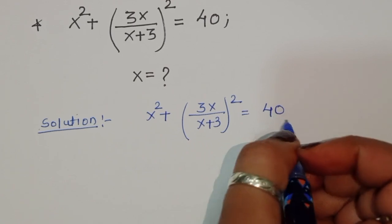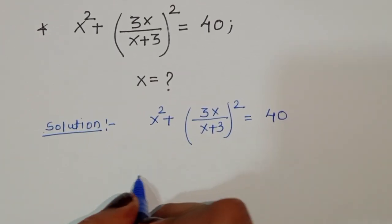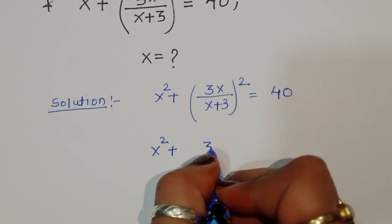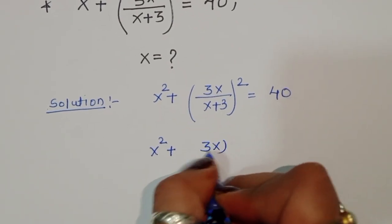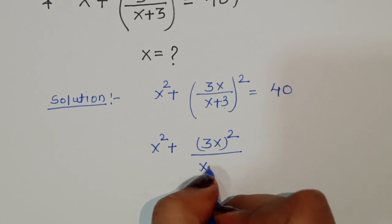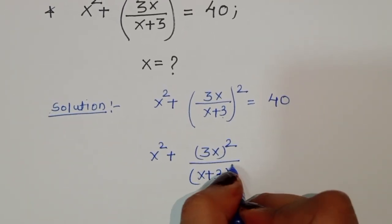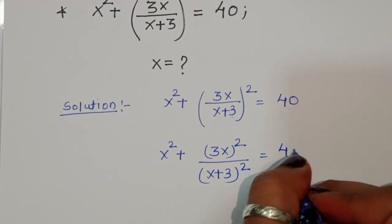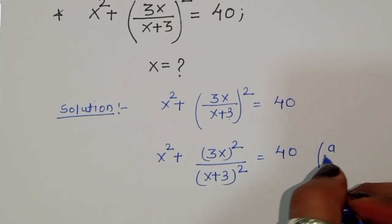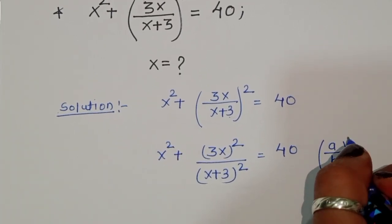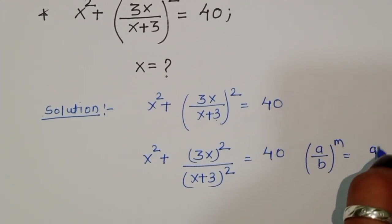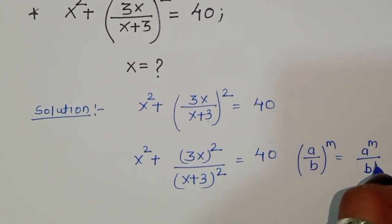We can write x² + 3x whole square upon (x + 3) whole square is equal to 40, because here we are applying the rule: (a/b)^m equals a^m upon b^m — we are separating the power between numerator and denominator.